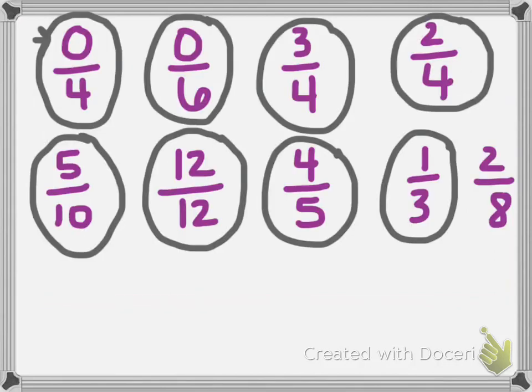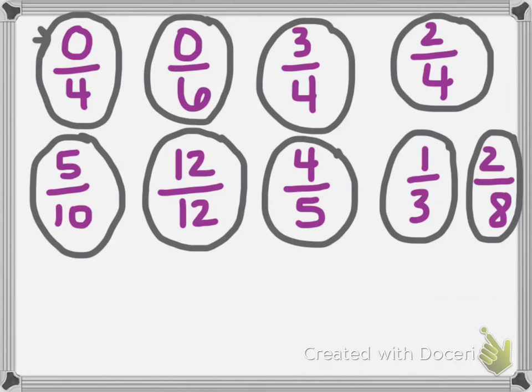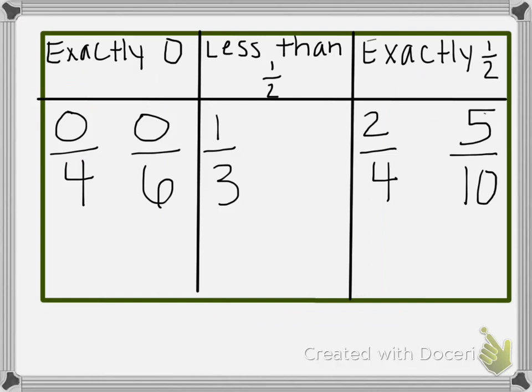The last fraction we're going to look at is 2 eighths. I want you to make a prediction of where you think 2 eighths is going to go on the table. Here's 2 eighths, and we can see that it is less than 1 half. So it will go in the less than 1 half part of our table.